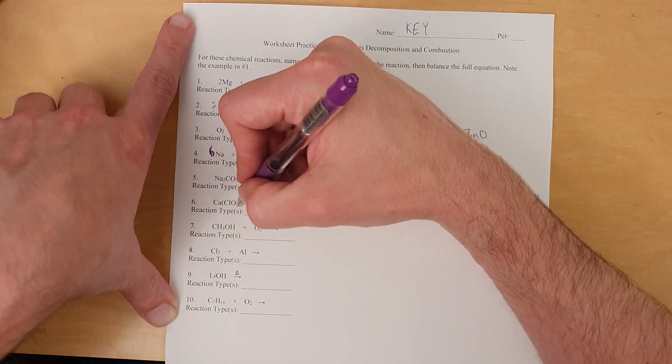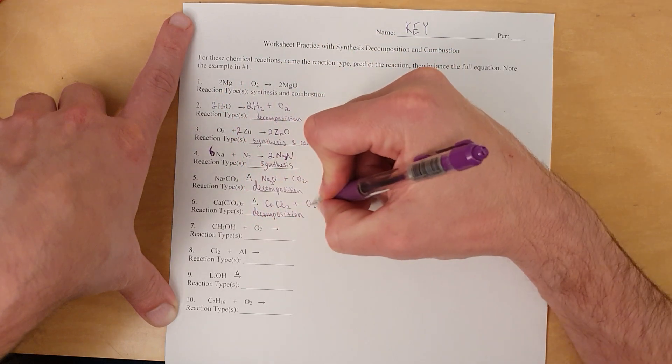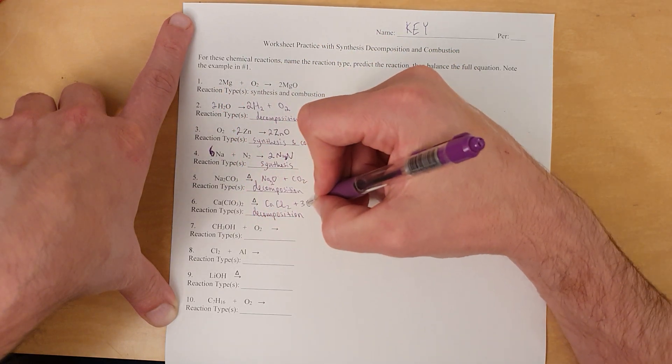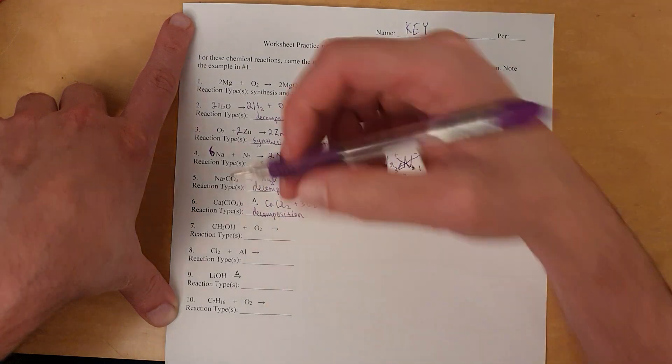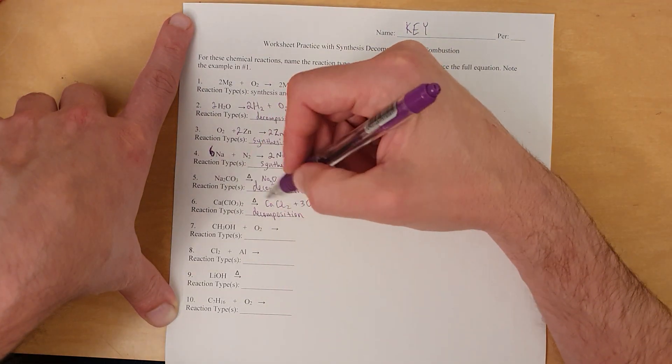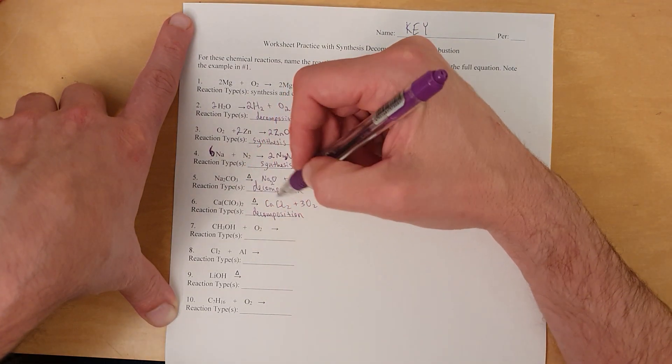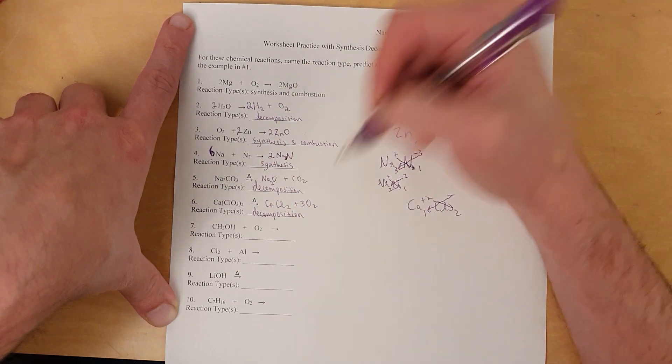3 oxygens times 2 makes 6 oxygens. So, you need to have 6 oxygens here. By putting a 3, I can have 6 oxygens. So, this actually does solve it. 1 calcium, 1 calcium, 2 chlorines, 2 chlorines, 6 oxygen, 6 oxygen. That's it. It's balanced.